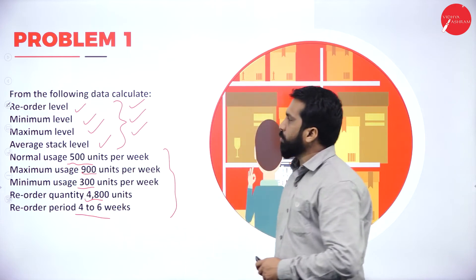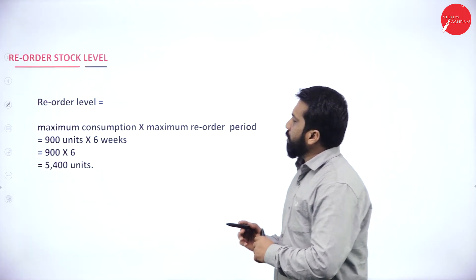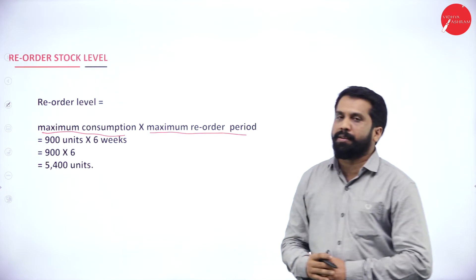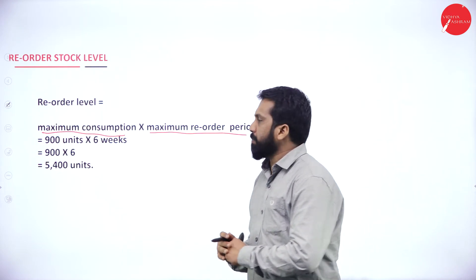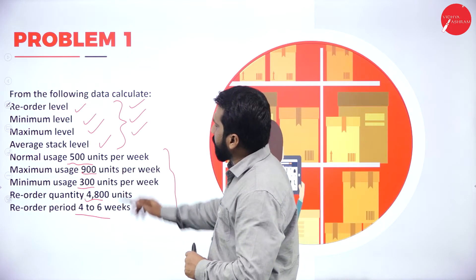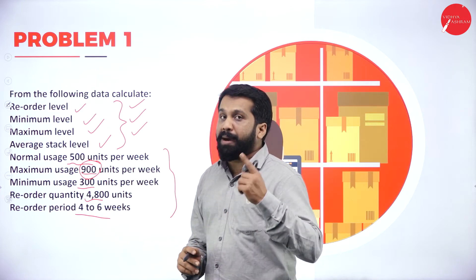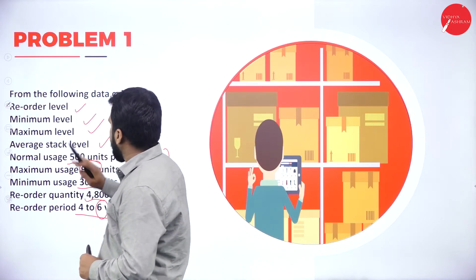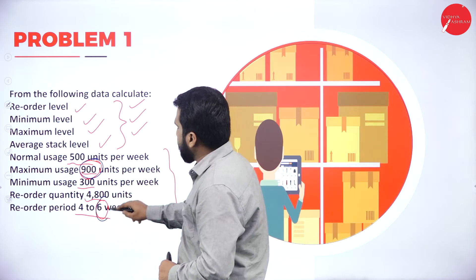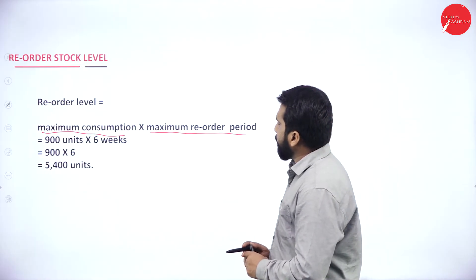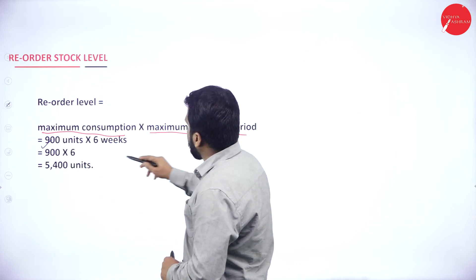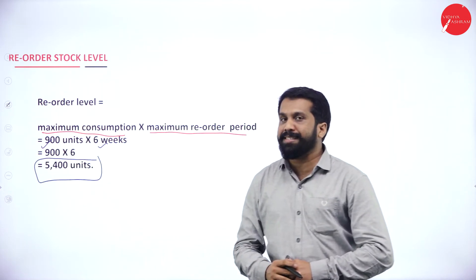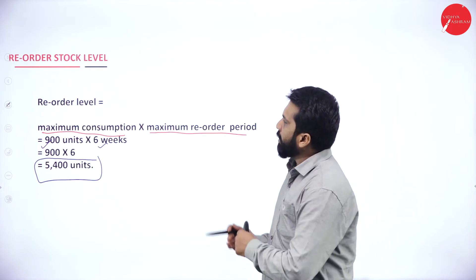First, we go for reorder level. The formula is: maximum consumption × maximum reorder period. Maximum consumption (maximum usage) is 900, and maximum reorder period is 6. So 900 × 6 = 5400 units. That is your reorder level.